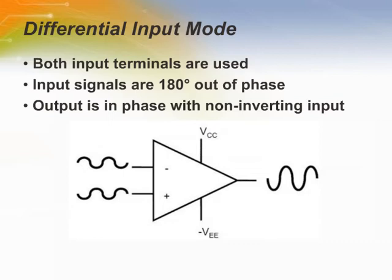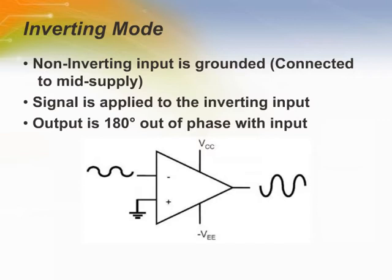In case the signals applied to both inputs are in phase, there should be no output, and that input signal is referred to as the common mode signal. Note that throughout the presentation, the terms 'output is grounded,' 'output is sitting at mid-supply,' and 'output is zero' are used interchangeably, since we assume dual supply voltage with a negative and positive voltage on the supply ends. In the Inverting Mode, the non-inverting input is grounded, the input signal is applied to the negative input, and the output signal is completely out of phase with the input signal.